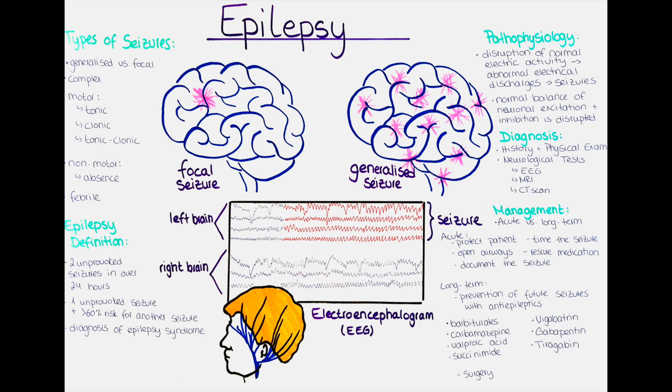Seizures can be triggered by different factors such as sleep deprivation, flashing lights, and stress, and can be associated with other medical conditions or occur without any underlying cause. We differentiate different types of seizures depending on which area or areas of the brain are involved and how the seizure manifests.